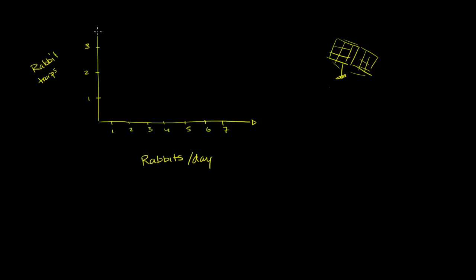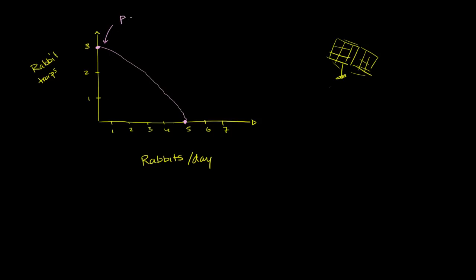Let's focus on this for now — maybe I'll do a surface in the future just for fun. So these are the rabbit traps, and the production possibilities frontier between rabbit traps and rabbits looks something like this. He could spend all his time making rabbit traps, but then he won't get any rabbits and will probably starve. Or he could spend all his time hunting and catch five rabbits per day, leaving no time to make traps. This is our current production possibilities frontier — PPF₀, our starting point. Anywhere on this curve achieves productive efficiency.